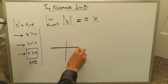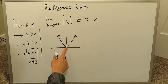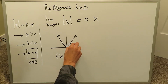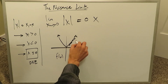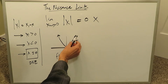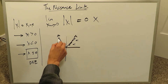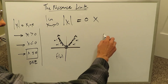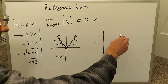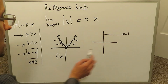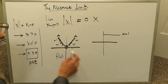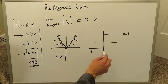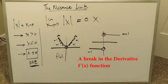When you look at the absolute value function graphically and derive its derivative using the graphic technique — examining slopes of tangent lines — for all values larger than 0 the slopes are always positive 1. For all values on the negative side, the slopes are minus 1. For x greater than 0, m equals 1; for x less than 0, m equals minus 1. But at x equal to 0, where the limit did not exist, the derivative does not exist. You end up having a break in the function — a discontinuity.